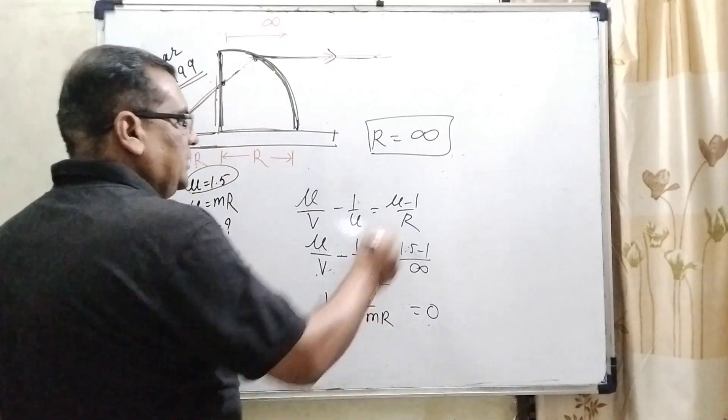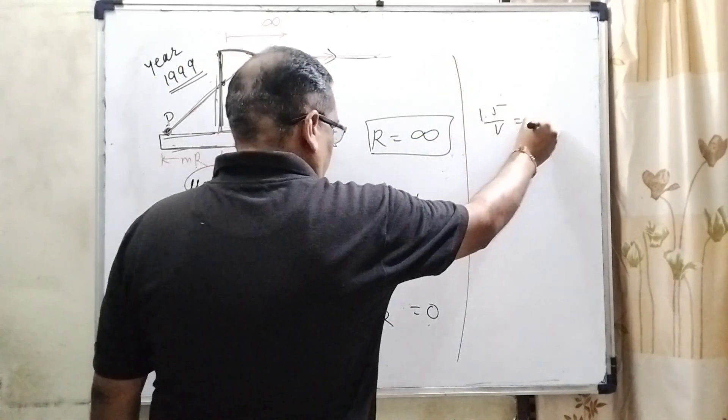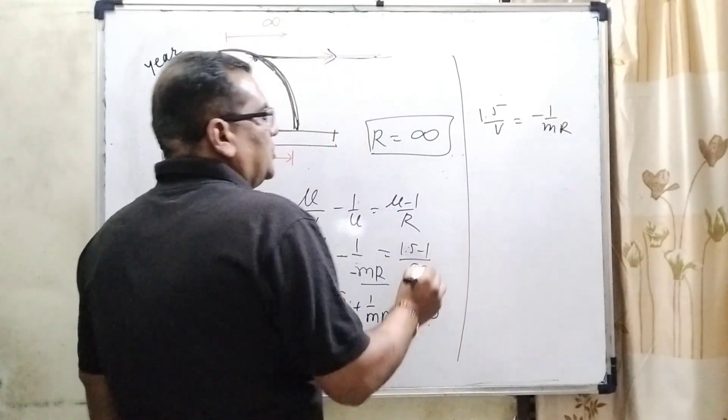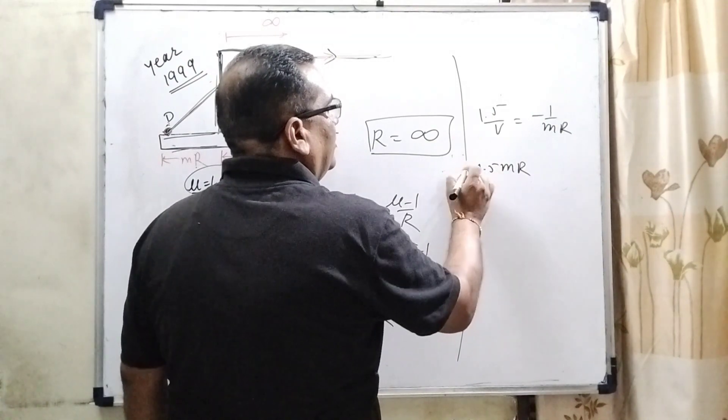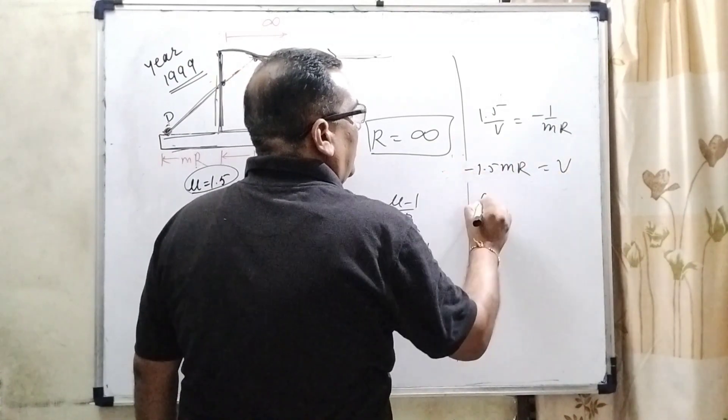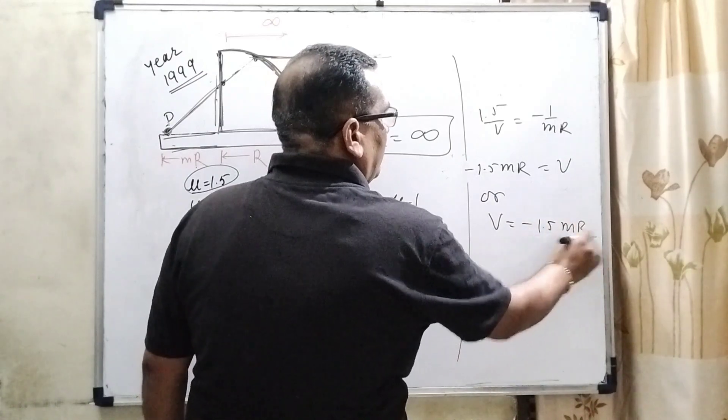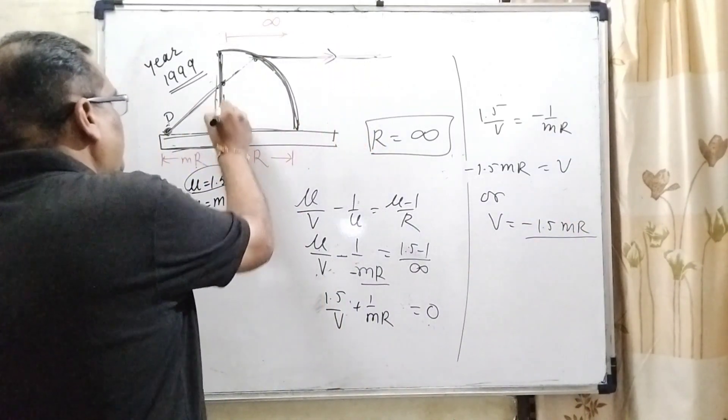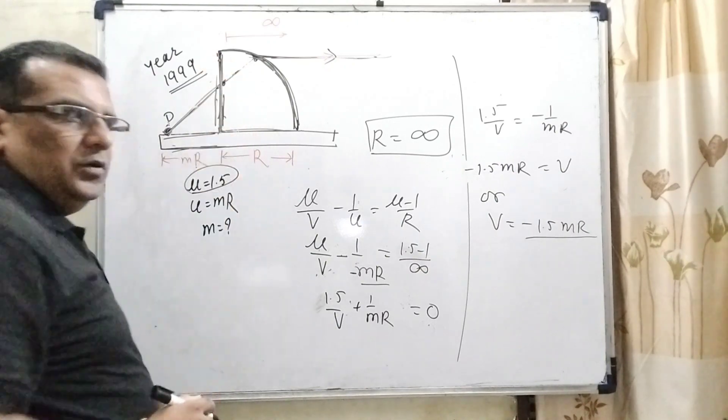Now transposing this term, 1.5 by v equal to minus 1 by mR. So here 1.5 mR negative is equal to v, or it can be written as v equal to minus 1.5 mR. What does it mean? It means its image is formed in front of this plane surface.